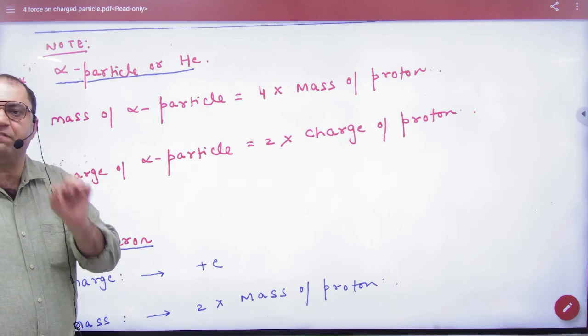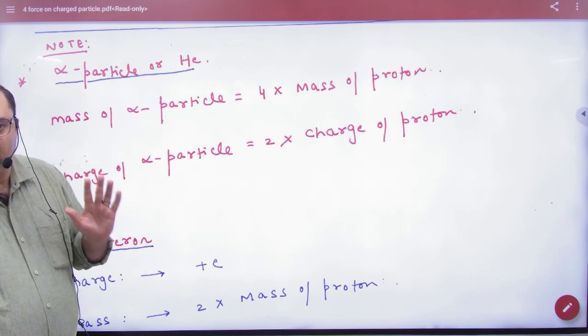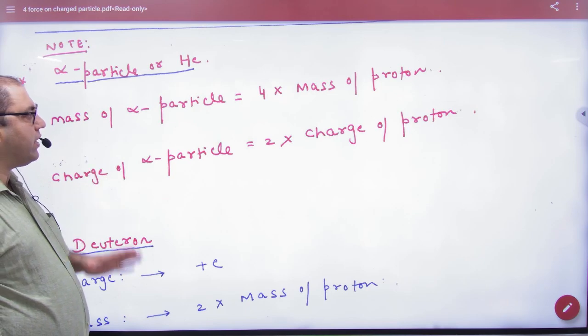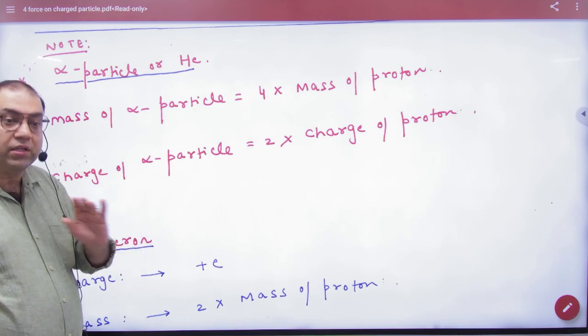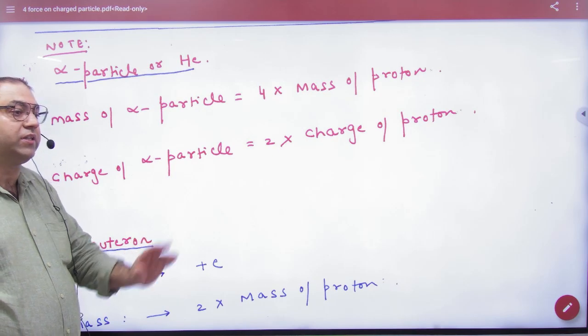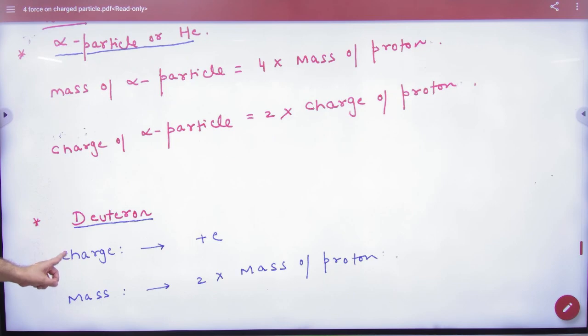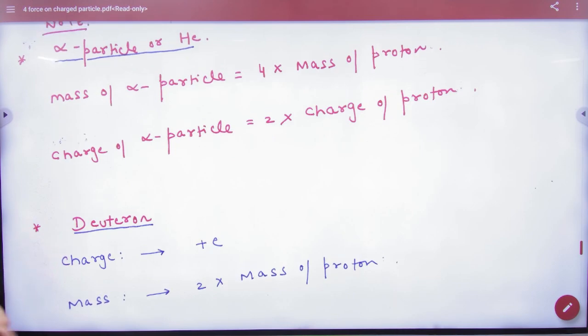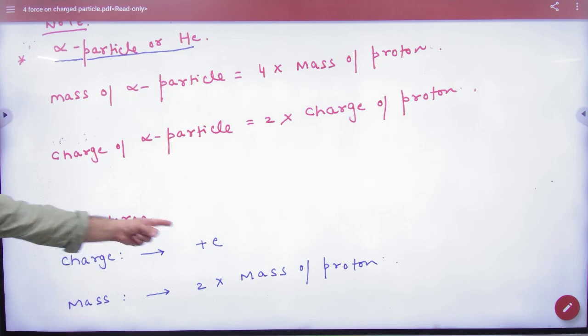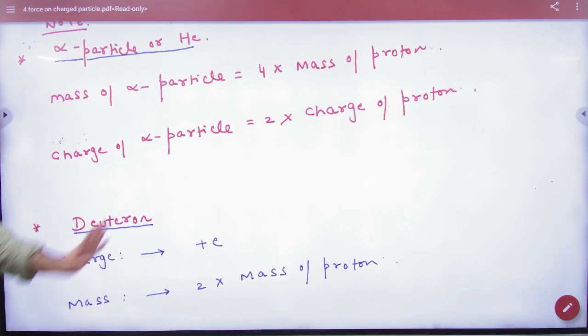Don't forget, there will be a numerical question with alpha particle that won't give mass or charge directly. You know there is 4 and 2 ratio here. In the same way, for deuteron, the charge equals proton and mass is twice. These two things note please.